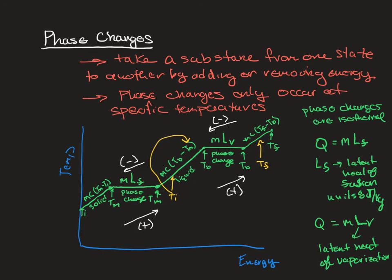In a calorimetry problem with an ice cube inside a calorimeter and hot water poured in, you need three Q values to deal with the ice cube — raising its temperature, melting it, and heating the resulting water — and then one Q to deal with the hot water, because the hot water is not going to change phase; it's just giving its energy to the ice cube.